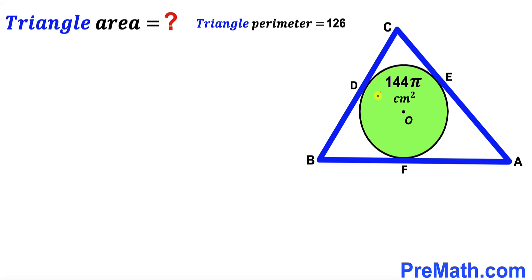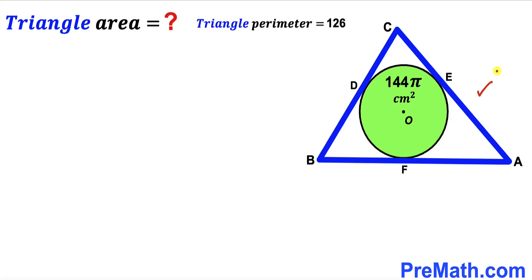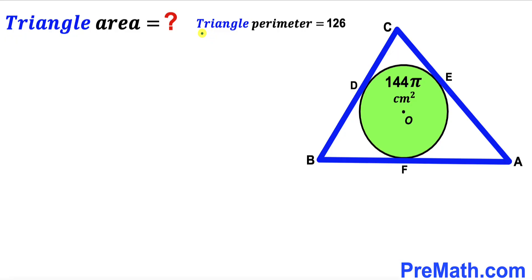Welcome to pre-math. In this video we have got a green shaded circle with center O fully inscribed in a blue triangle ABC, as you can see in the given diagram, such that the points D, E, and F are points of tangency. The area of this green shaded circle has been given as 144π centimeter square, and the perimeter of this blue triangle has been given as 126 centimeter.